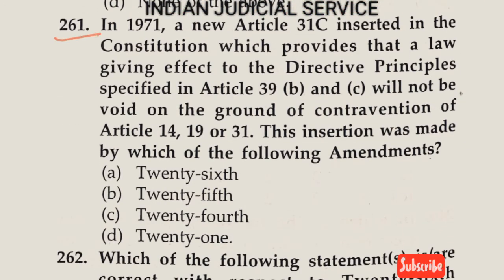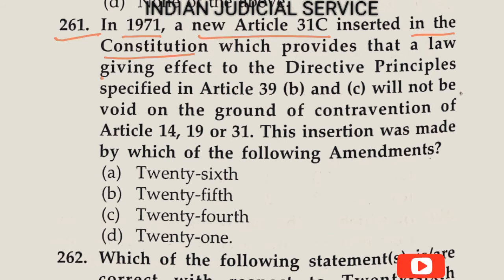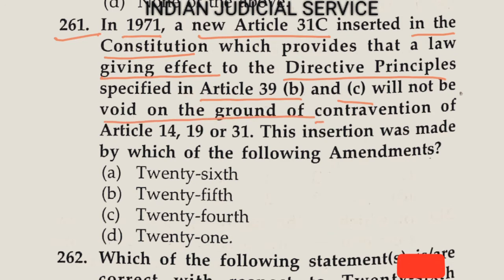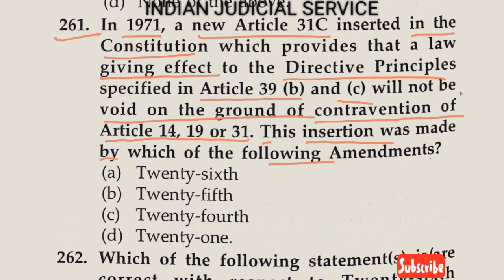Question number 261: In 1971, a new Article 31C was inserted into the constitution, providing that a law giving effect to directive principles specified in Article 39(b) and (c) will not be void on the ground of contravention of Articles 14, 19, and 31. This insertion was made by the 25th amendment. The answer is Option B.